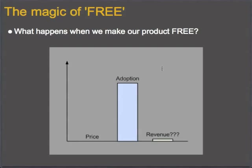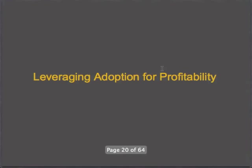When you make it free, the adoption obviously goes up — you're going to get a lot of people who say they'll sign up if it's free. But because of that adoption, I put some question marks around revenue, because it becomes kind of this unknown. Your revenue becomes this unknown thing because you're not charging money for software anymore. A lot of people are completely focused on price and revenue, and they completely ignore adoption. What they don't realize is that adoption is so powerful if you know how to use it. What I'm going to talk about next is leveraging adoption for profitability — how you can leverage adoption to make massive amounts of revenue, potentially more than if you were just charging for the software.